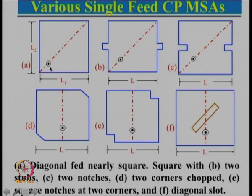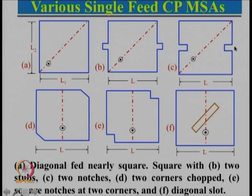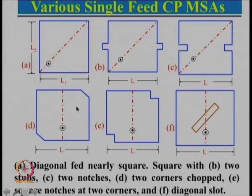Instead of using a nearly square patch, one can also use a square patch with two steps — one dimension is standard and this dimension is slightly more, so the frequency will reduce, and we again feed along the diagonal. Instead of adding a step, a notch can be cut so this length will be less and this length more. One can also chop the corners — by cutting the corner chops, one diagonal length will be smaller giving a slightly different frequency compared to the other diagonal length. Feeding between the two, one will be 45 degrees leading and one will be 45 degrees lagging, giving a net 90 degree phase difference.